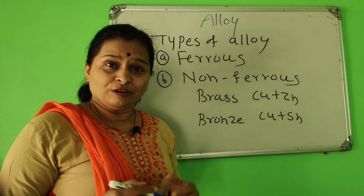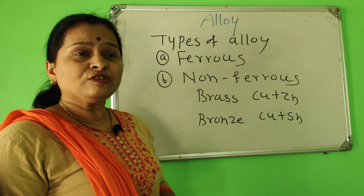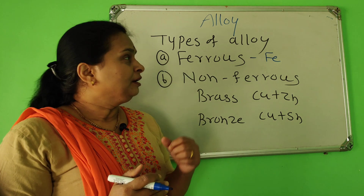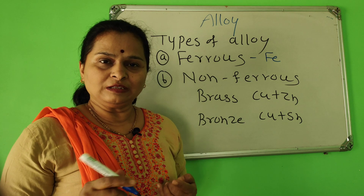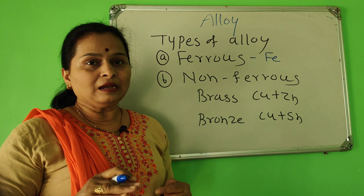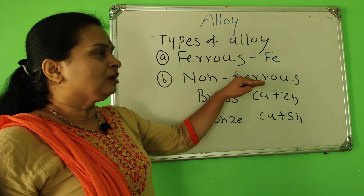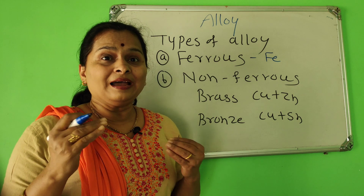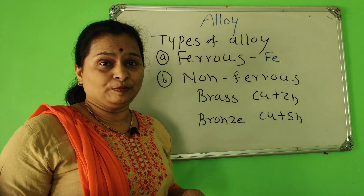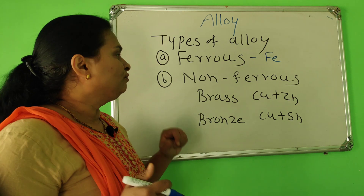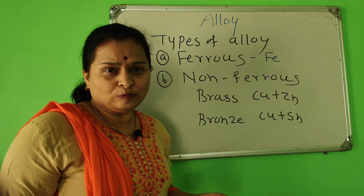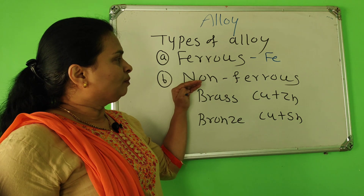There are two types of alloy. Ferrous alloy means the alloy which contains iron as one of the major components — at least 50% iron. For example, all types of steel: stainless steel, magnetic steel, heat-resisting steel, spring steel. Non-ferrous alloy means the alloy which does not contain iron, or contains less than 50% iron. For example, brass — composition of copper and zinc — and bronze — copper and tin — are examples of non-ferrous alloy.